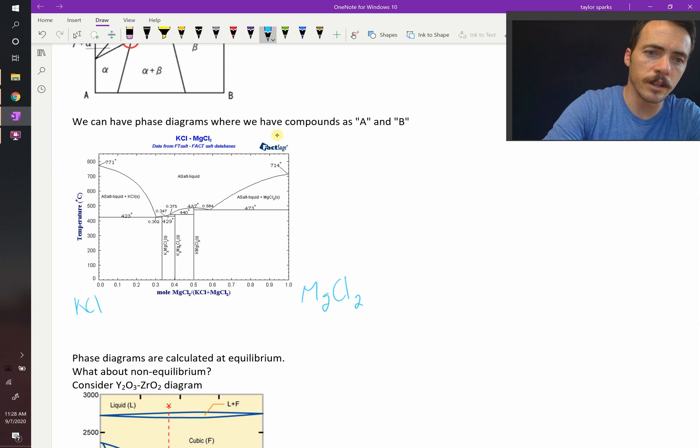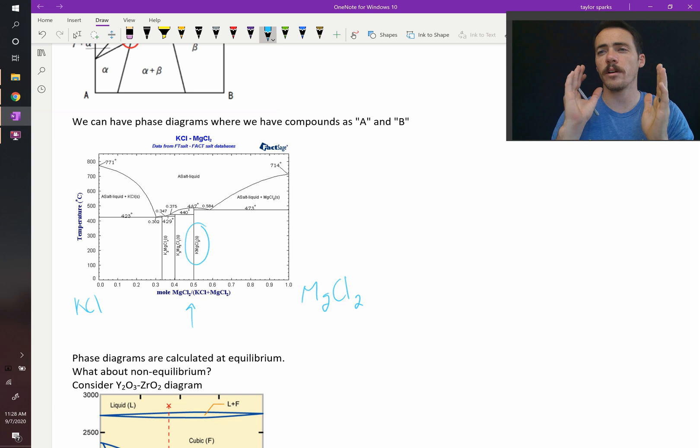And you know, it's been labeled correctly, like take a look at this middle compound, right? Occurring at 50 mole percent, right? The mole fraction is 0.5. So in other words, there's just as many moles of KCl as there are MgCl2.